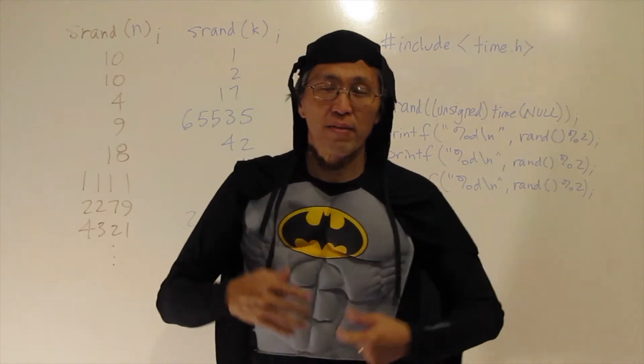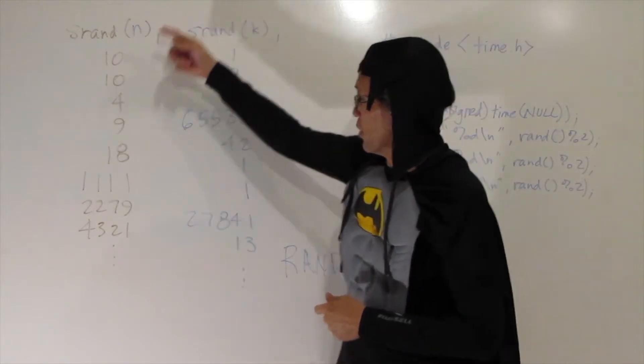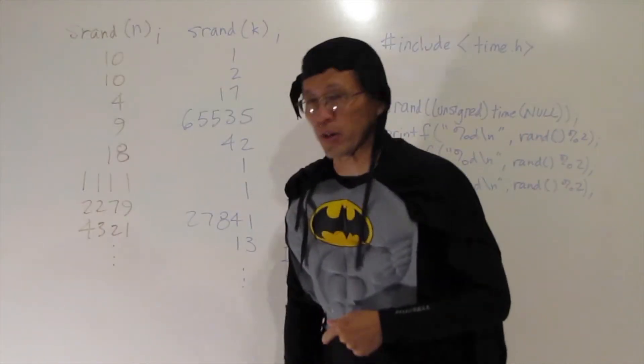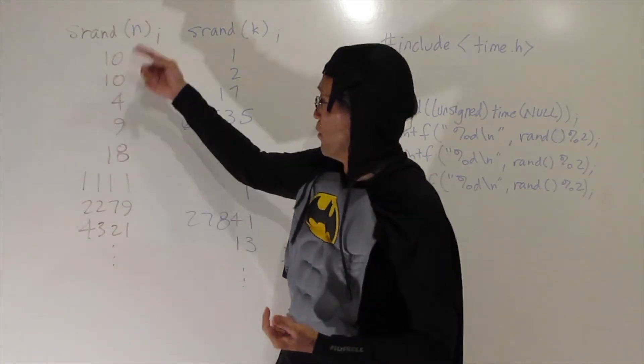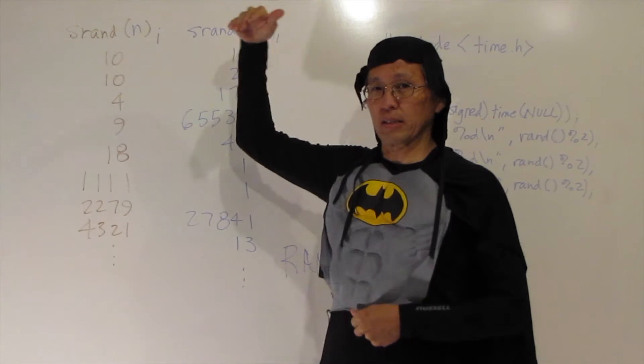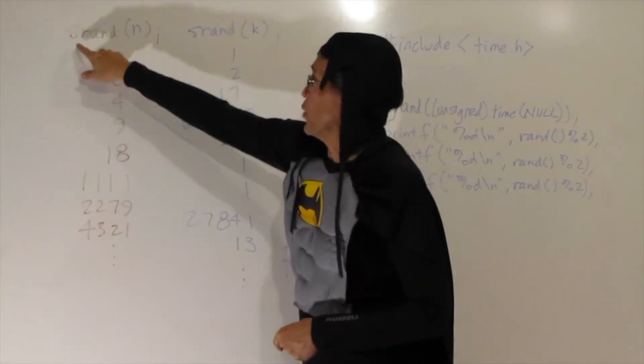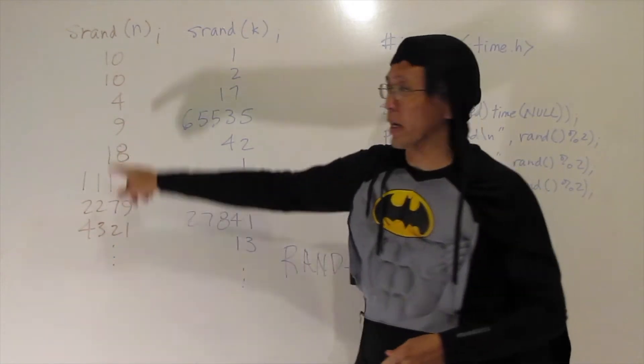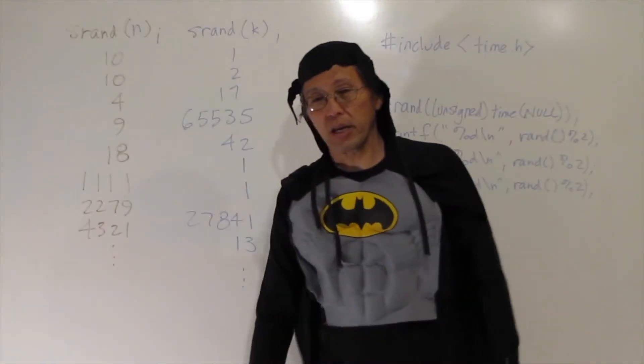Really what happens is there's an algorithm that creates a random number and it just creates this list over and over again. It just keeps going every time you call the random number generator, it creates another random number. What determines the list is that seed that in C++,